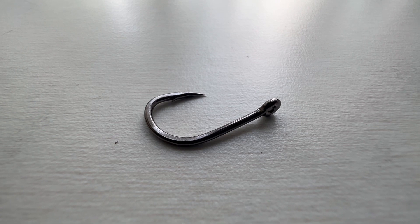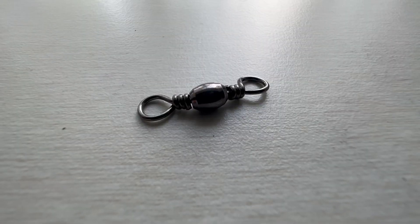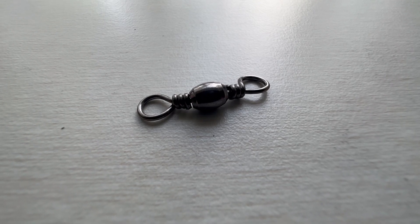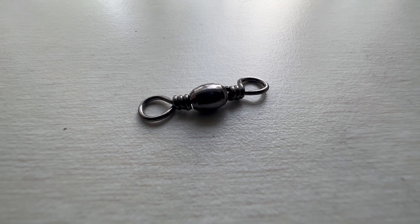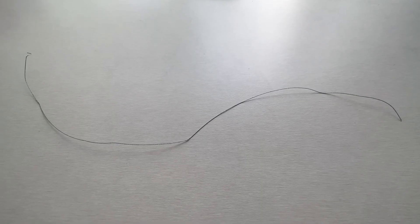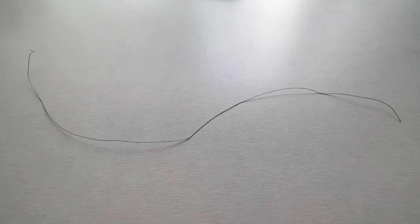For the fourth component we have a metal swivel. You can use a smaller one or bigger one, size doesn't matter here. For the last component we have a foot worth of braided line. You can use any line but I personally like to use braided line.